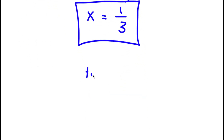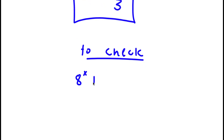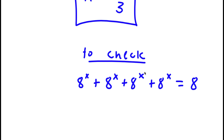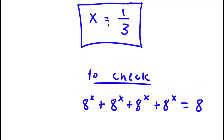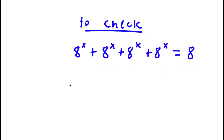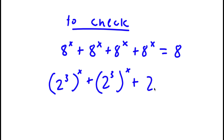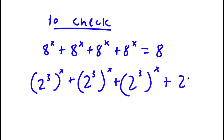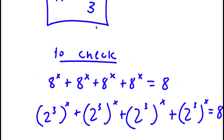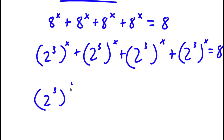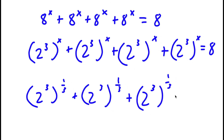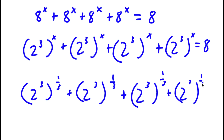Now to check, I'll plug in. Starting with 8 to the power of x plus 8 to the power of x plus 8 to the power of x plus 8 to the power of x is equal to 8. I know x is 1 third, but first I'm going to change 8 to 2 to the power of 3. So I have 2 to the power of 3 to the power of x, four times, equal to 8. Now substituting x equals 1 third, I have 2 to the power of 3 to the power of 1 third, four times, equal to 8.